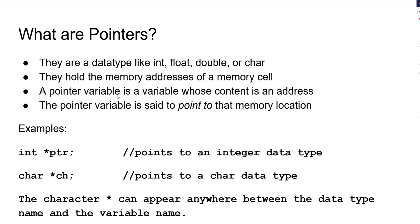A pointer variable is a variable whose content is an address. How do you declare it? You write int* ptr — that says you're declaring a pointer. PTR is just the name of the pointer, you can call it whatever you want. It points to an integer. The pointer variable is said to point to that memory location that it is essentially addressing. char* ch says ch will point to a char data type.